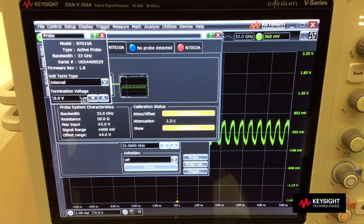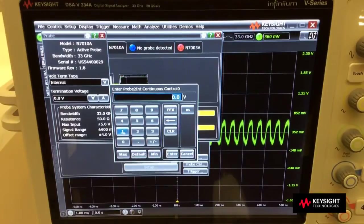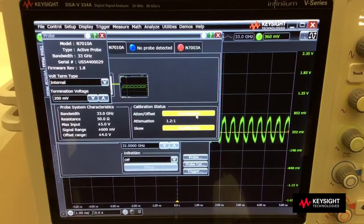So assuming that I have an M5 signal and it needs to be terminated into 200 millivolts, I need to enter the 200 millivolts here, and then the 200 millivolts is now applied to the signal that I am measuring.